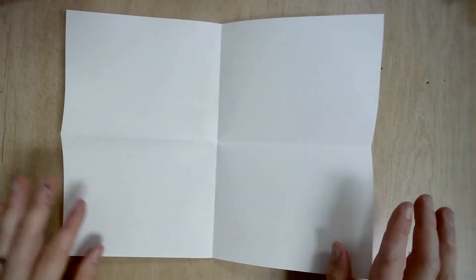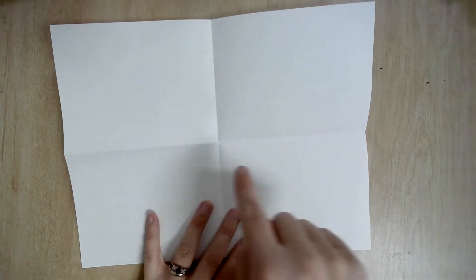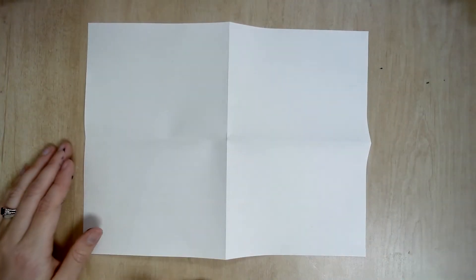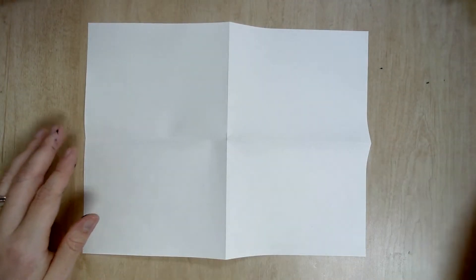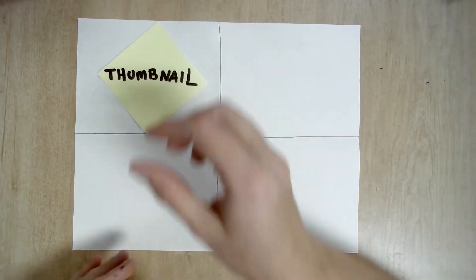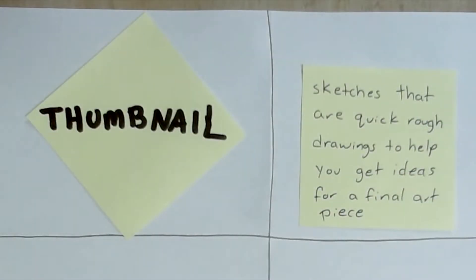So when you unfold it you'll have one, two, three, four sections to draw on. Each of these four sections will be a different thumbnail drawing for your final idea. A thumbnail is a sketch that is a quick rough drawing to help you get ideas for your final art piece.